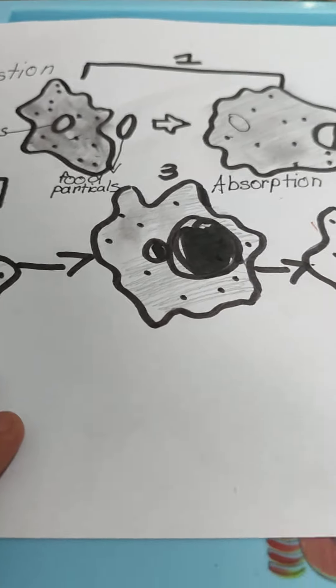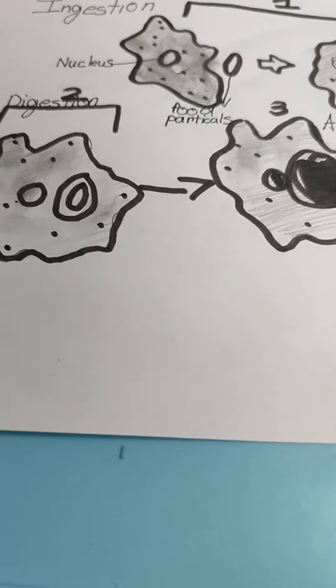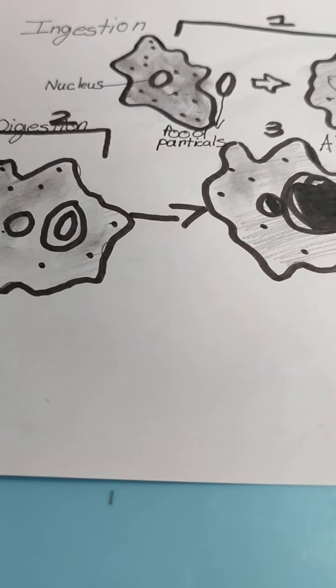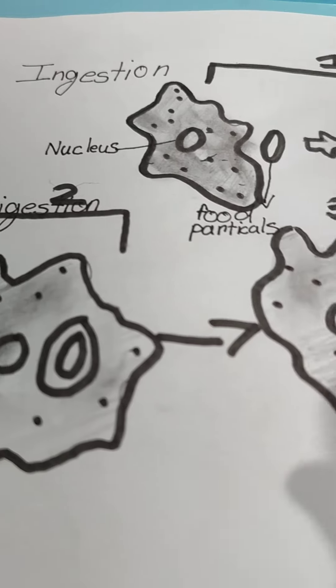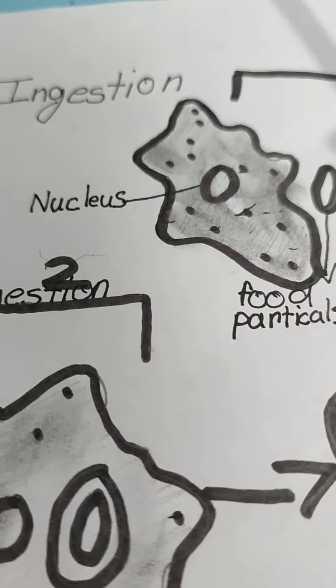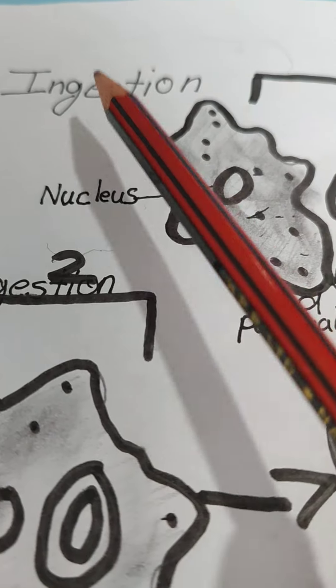Today we are going to see digestion in amoeba. Amoeba is a unicellular organism we can't see with our naked eyes, only with a microscope. The first process is always ingestion.